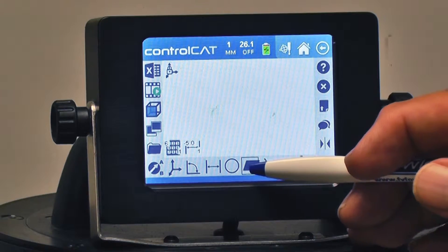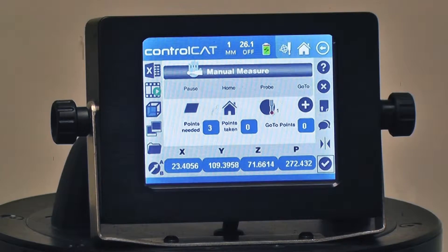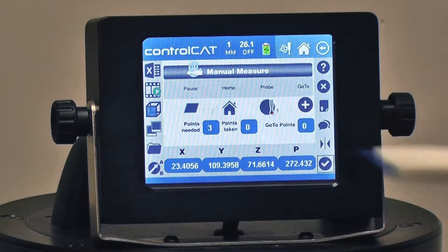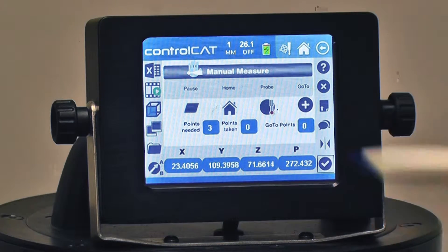It then comes up with another screen telling me the number of points I have to take to create a plane, how many I've taken, and what probe I'm using.